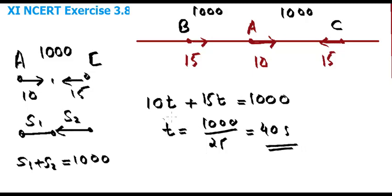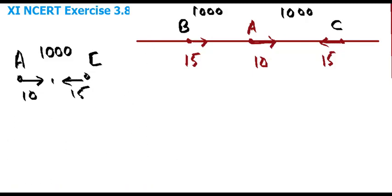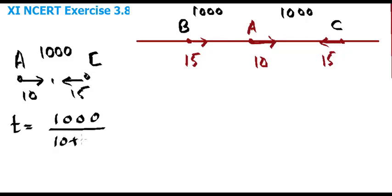This part can be done easily using the concept of relative speed. Together, A and C cover the distance of 1000 m. The time taken T equals the initial separation 1000 divided by the relative speed between A and C. Since A and C are moving in opposite directions, you simply add their speeds: 10 plus 15 equals 25. So you get the same answer — C will reach A in 40 seconds.